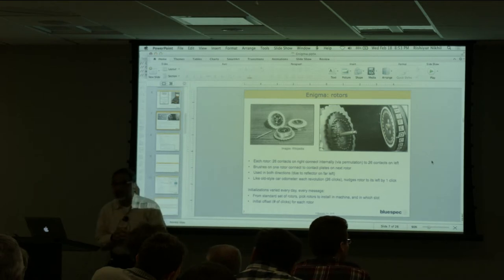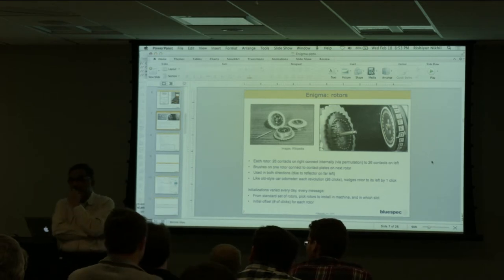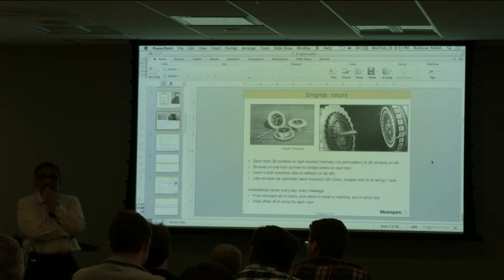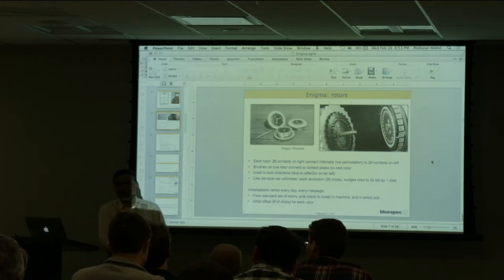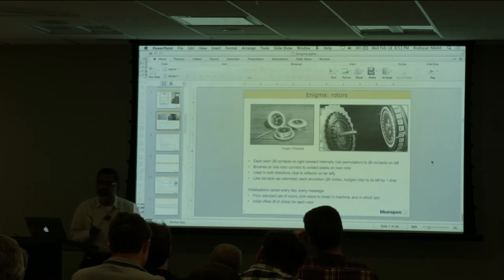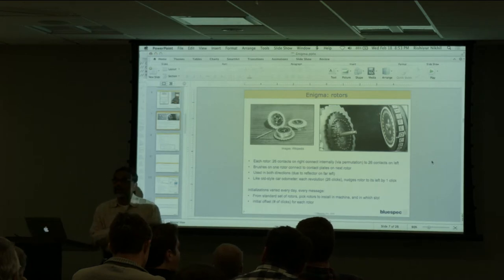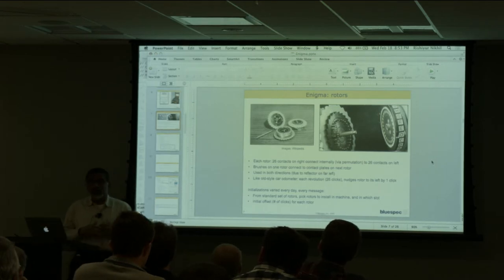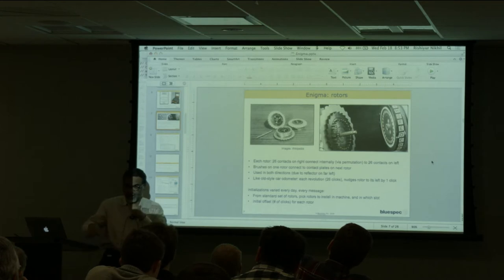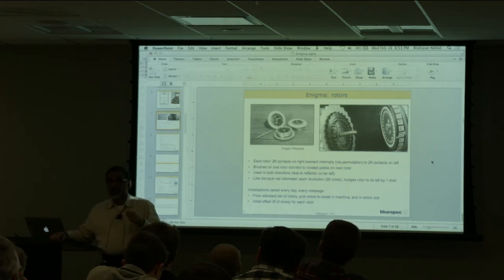Question about the switchboard: it's also a permutation, but a limited one — like six cables exchanging six pairs of letters. A lot of the successes in code breaking were because people were sloppy in communicating what those initial settings were.